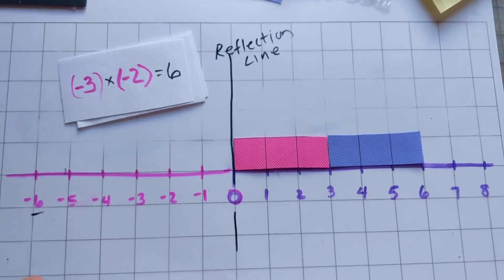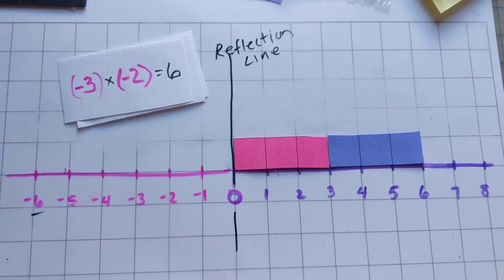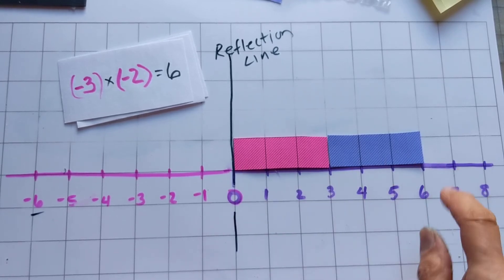So that's how to envision why when you multiply two negative numbers together you end up back in the positive area.